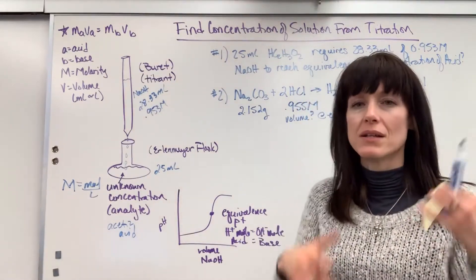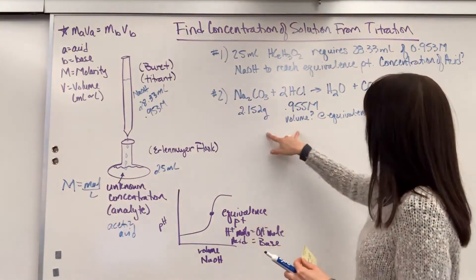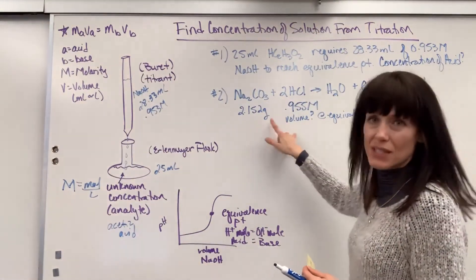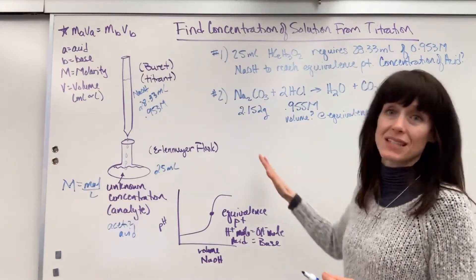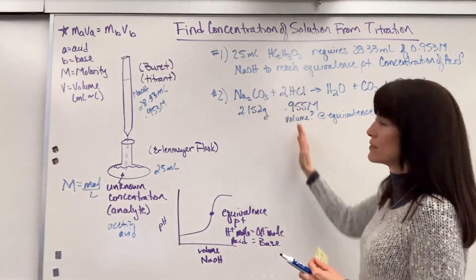I want to backtrack how my brain digested and worked itself through this. I know, because it said at equivalence point, I know that the moles have to equal each other. That's given because of that term, by definition. The moles have to equal each other.